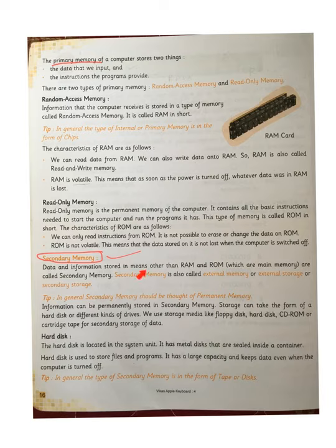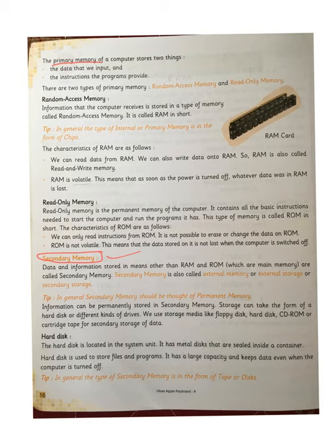Data and information stored in means other than RAM and ROM, which are main memory, are called secondary memory. Whatever data and information is stored other than RAM and ROM, that memory is called secondary memory. It is also called external memory, external storage, or secondary storage — these are different names for secondary memory.